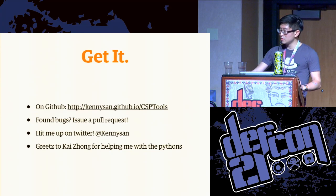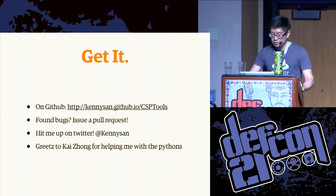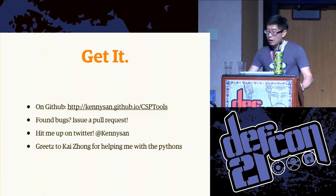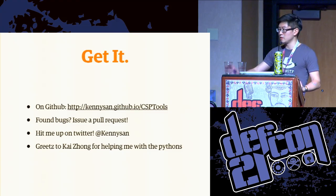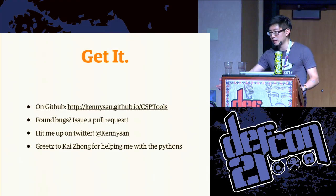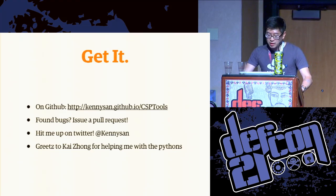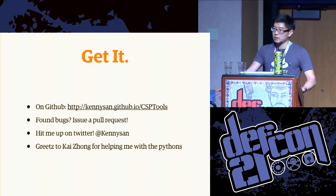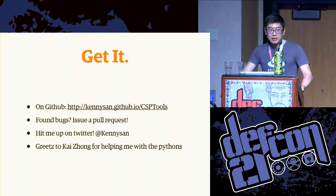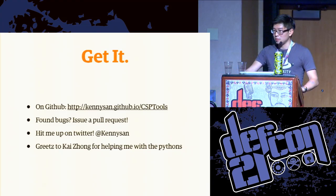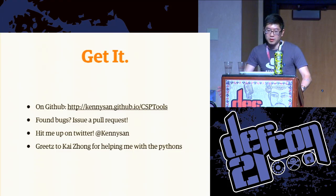If you want to get CSP Tools, it's available on GitHub at the following URL. Feel free to issue pull requests if you find bugs with my implementation. If you have questions, hit me up afterwards in the QA lounge or on Twitter at KennySan if you'd also like to view a copy of these slides. I'd also like to give a huge shout-out to Kai Zong for helping me tremendously with the initial implementation of CSP, and a general shout-out to the Etsy security team for being tremendously supportive of my efforts in implementing content security policy.